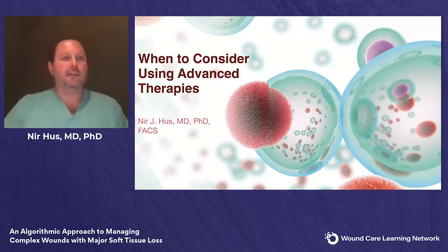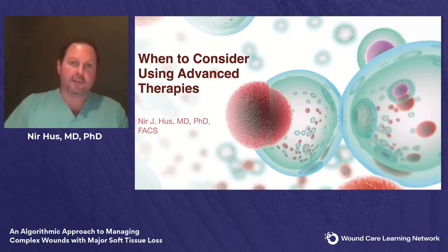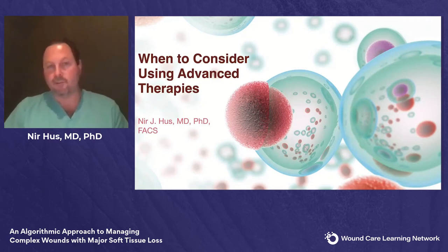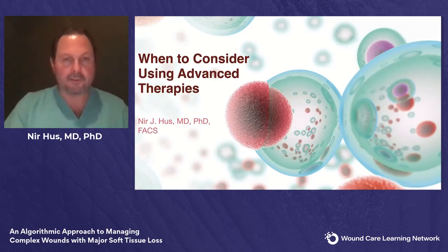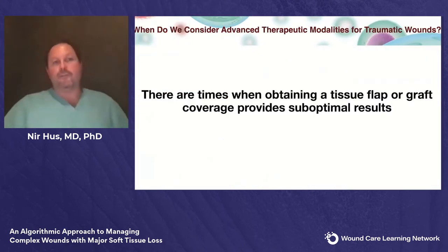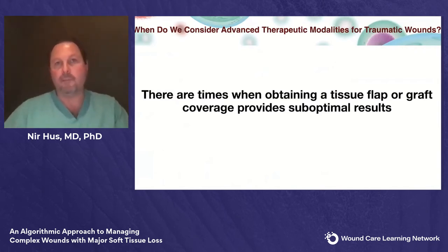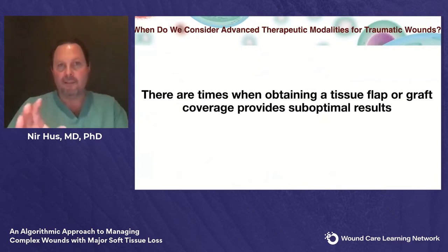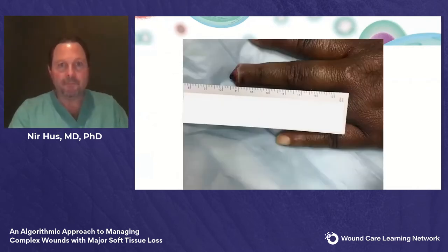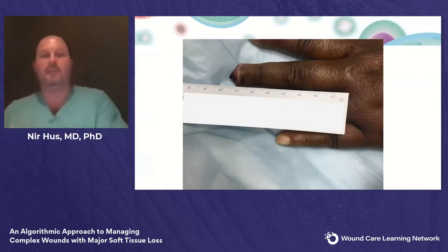Thank you, Catherine. We're going to discuss when to consider using advanced therapies. My name is Dr. Nir Huss. I'm a trauma and critical care general surgery surgeon in Delray Beach, Florida. There are definitely times when obtaining tissue flaps or grafting coverage provides suboptimal results. In such a situation, the UBM matrix provides a nice answer to a quite common problem.